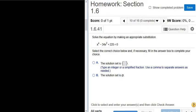Solve the equation by making an appropriate substitution. We have x to the 4th minus 34x squared plus 225 equals 0.